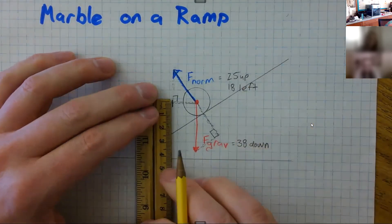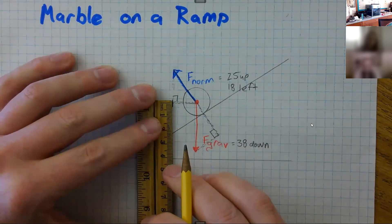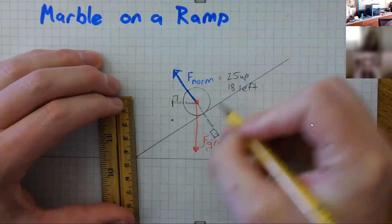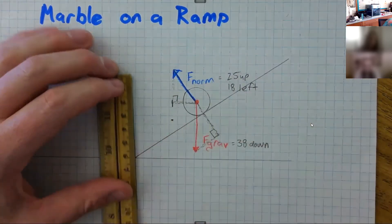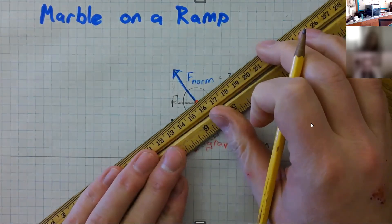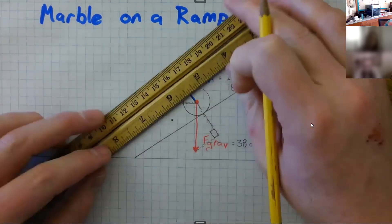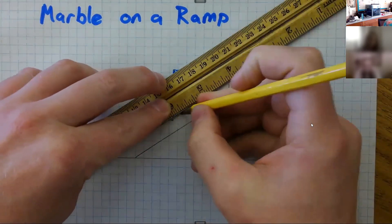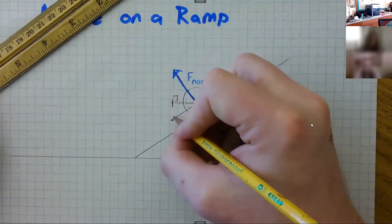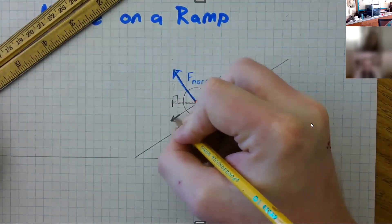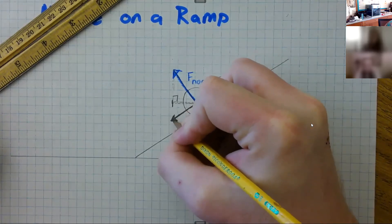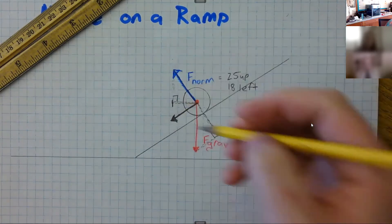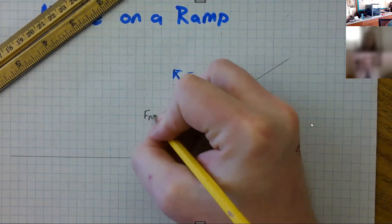25 minus 38 is negative 13, so let's measure 13 down. That's about right there. So right here would be 18 left and 13 down, and that just so happens to make our net force exactly parallel to the ramp. The math just happens to magically work out that our net force is parallel to the ramp. And the net force in a ramp problem will always be parallel to the ramp and only as far left as the normal force goes. So that's our net force, F_net.